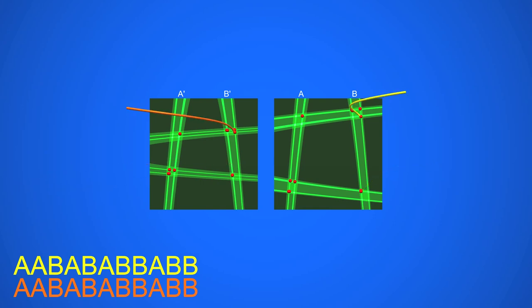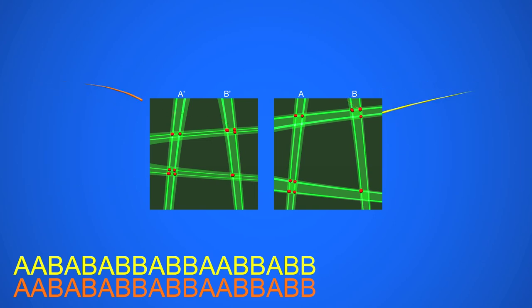We can deform the horseshoe any way we want, and not only does it remain chaotic, but it keeps the same dynamics as before. Individual trajectories are unstable, but the dynamics of the whole is stable.